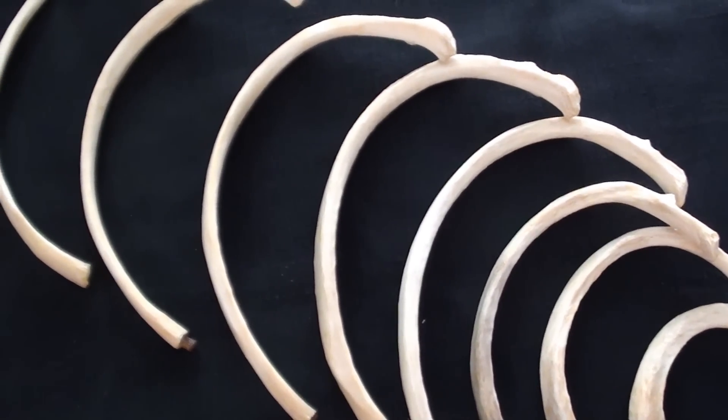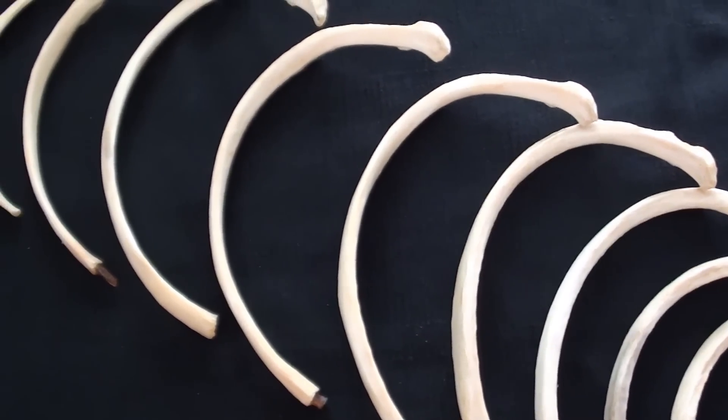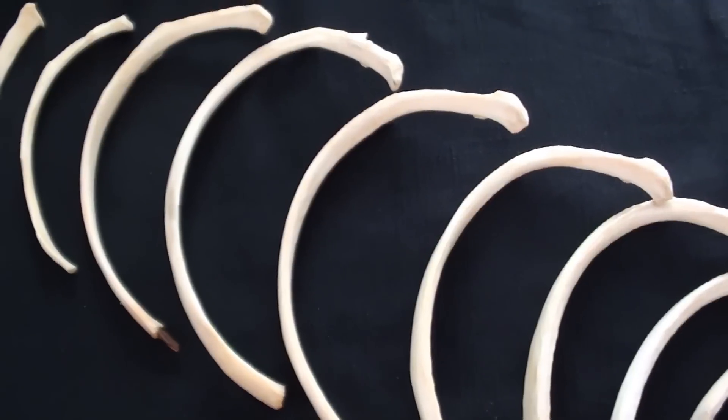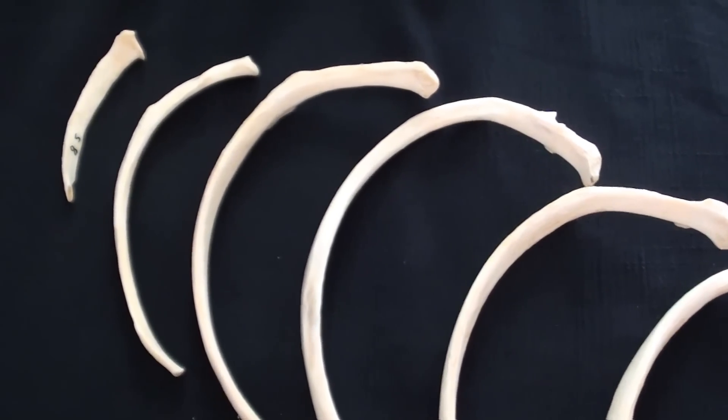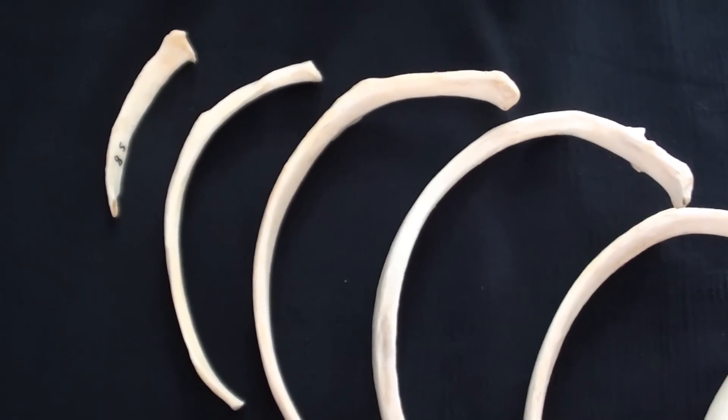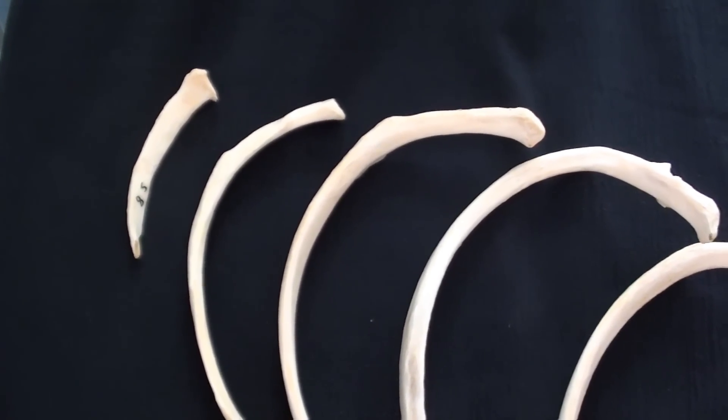As we move towards the lower end of the thoracic cage, ribs become again shorter and straighter, and the very last rib that we can see here in the upper left corner, rib number 12, appears to have very little similarity with the rest of the bones that it belongs to.